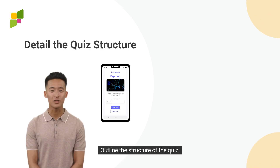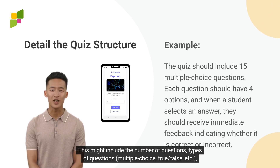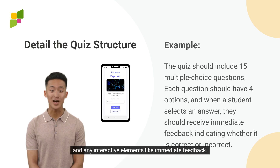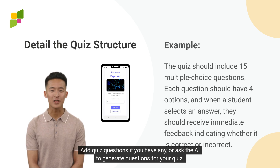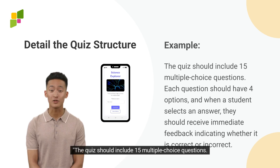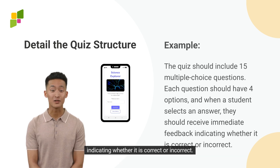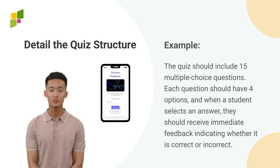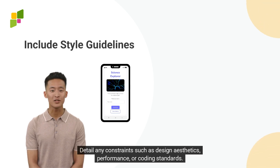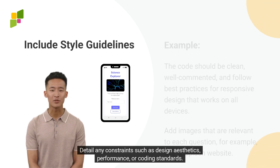Outline the structure of the quiz. This might include the number of questions, types of questions — multiple choice, true/false, etc. — and any interactive elements like immediate feedback. Add quiz questions if you have any, or ask the AI to generate questions for your quiz. For example: the quiz should include 15 multiple choice questions. Each question should have four options, and when a student selects an answer, they should receive immediate feedback indicating whether it is correct or incorrect. Detail any constraints such as design aesthetics, performance, or coding standards.